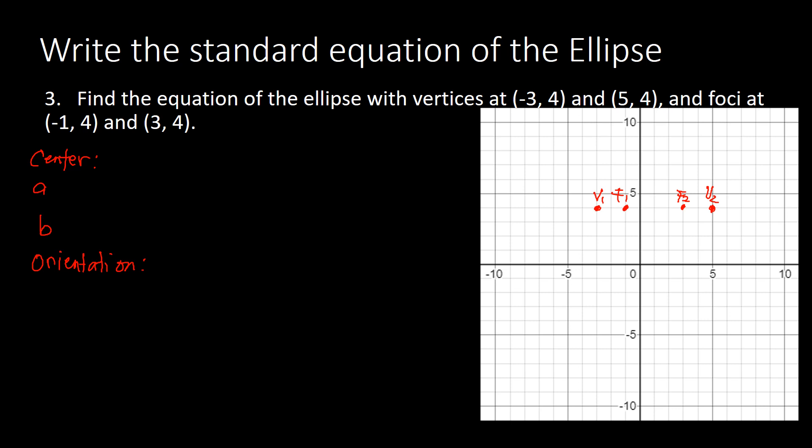To locate the center graphically, count the units between the two foci: there are four units from focus one to focus two. Dividing by two gives two, so the center is two units from either focus. Counting two units from focus one, our center is at (-1, 4) — wait, let me recheck: two units from focus one at (-1, 4) gives a center at (1, 4).